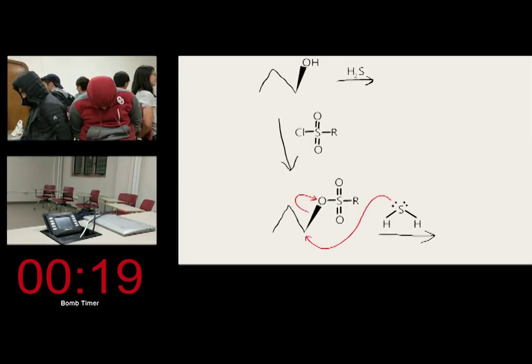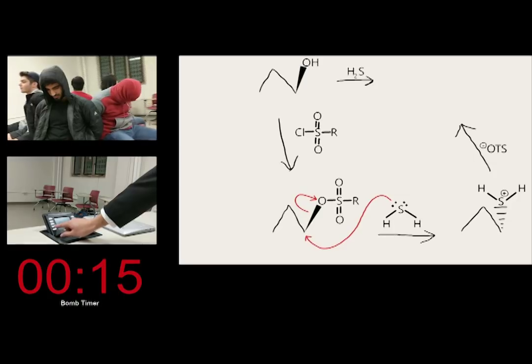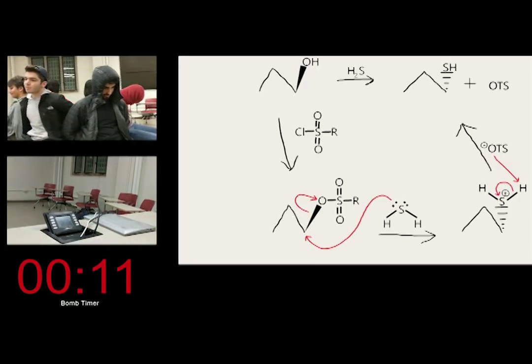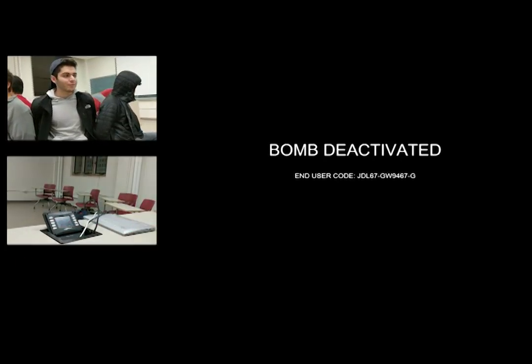The hydrogen sulfite attacks at the primary carbon, while the tosylate leaves. You now have a positively charged species. Proton transfer selected in order to complete the reactions. Congratulations. You have neutralized the gas to produce a liquid. The bomb can no longer function. You have saved the day, Agent.